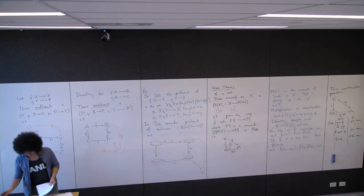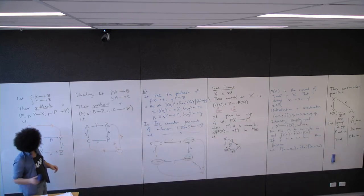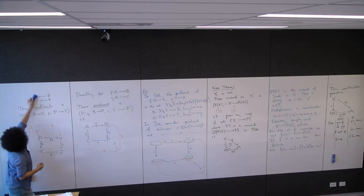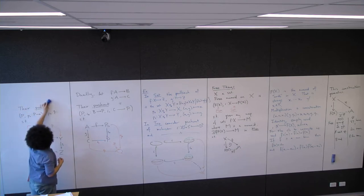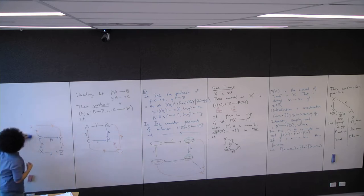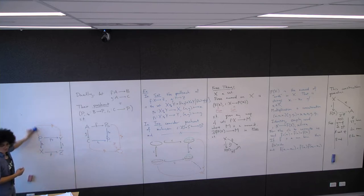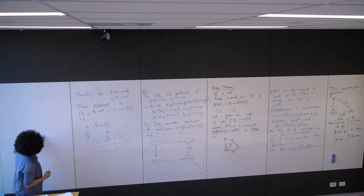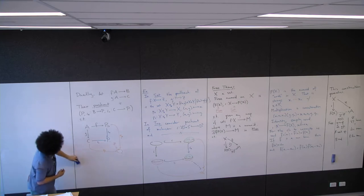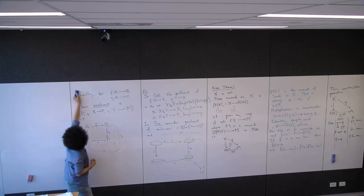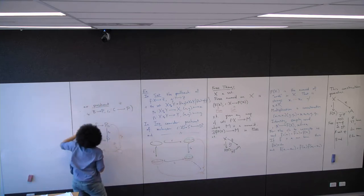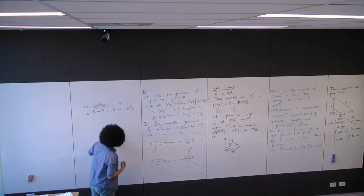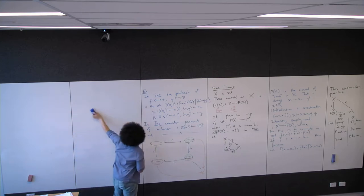This generalizes further without requiring these just to be set maps. So now we're going to see tensor products — hopefully people have seen tensor products. We're going to see tensor products and some other similar things.